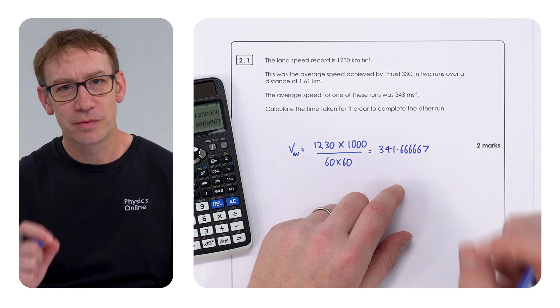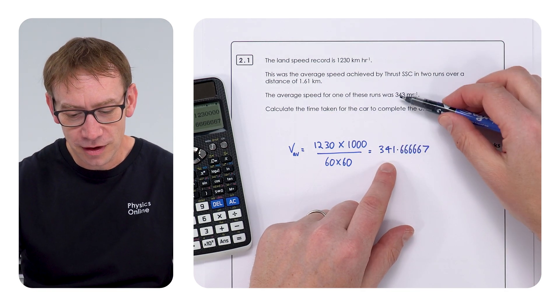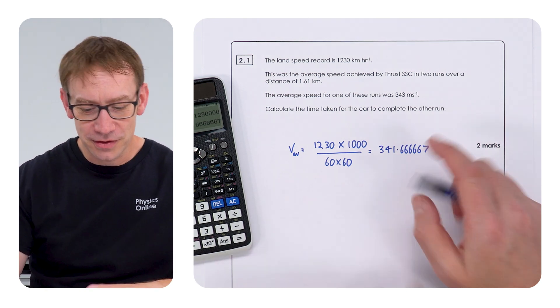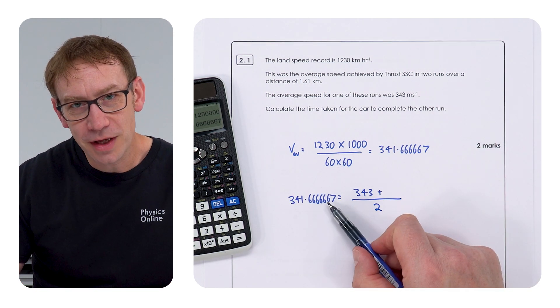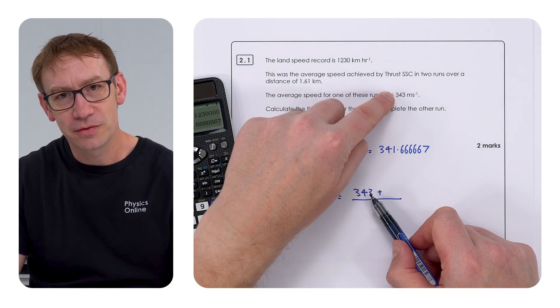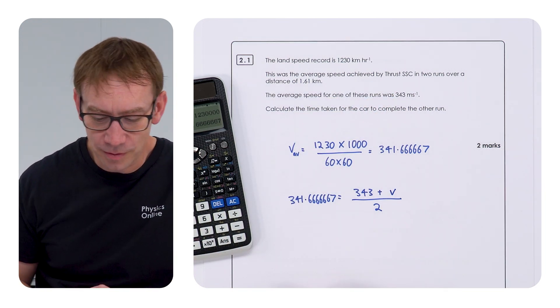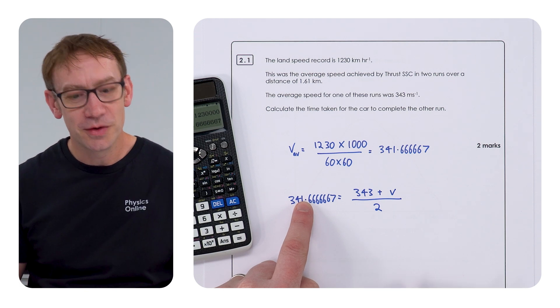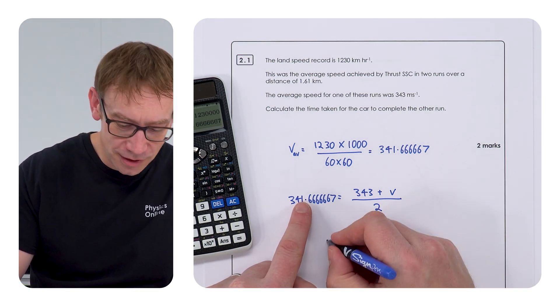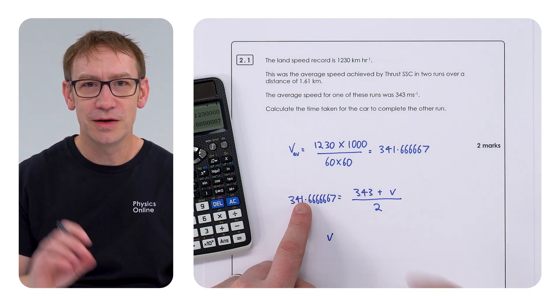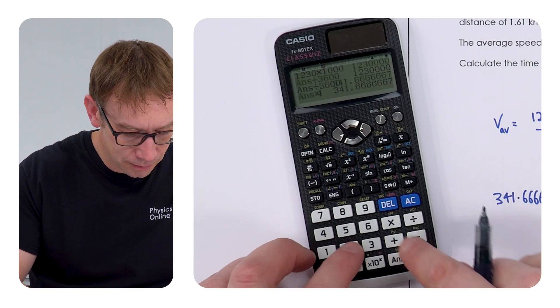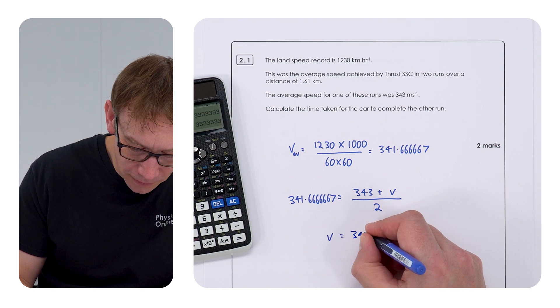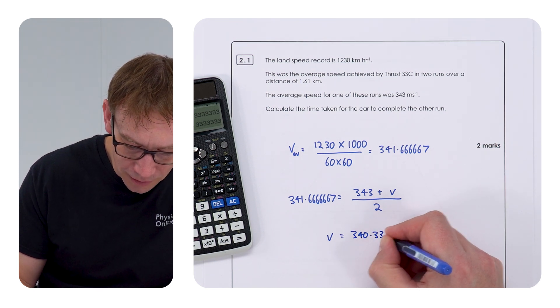And we know that's the right answer because it's going to be very close to the average of the two runs. Now, of course, this number here is the average, which is going to be equal to the speed of this run plus the speed of the other run divided by two. So basically all we need to do is multiply that number by two, take away 343, and then we'll find the speed or the average speed of that other run. Which is equal to 340.333.